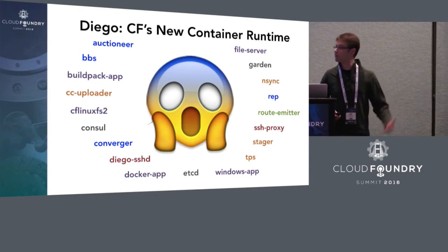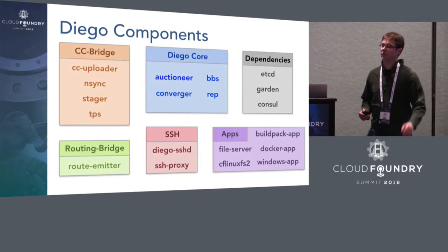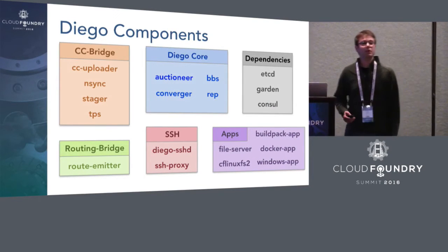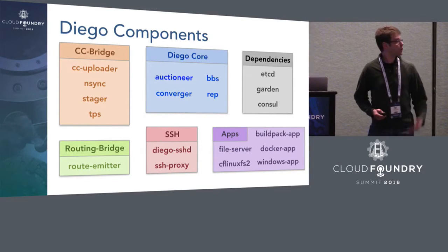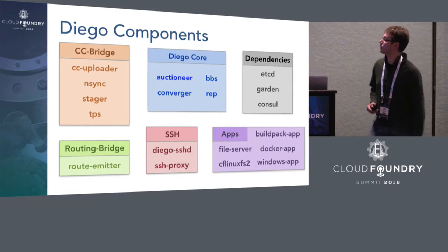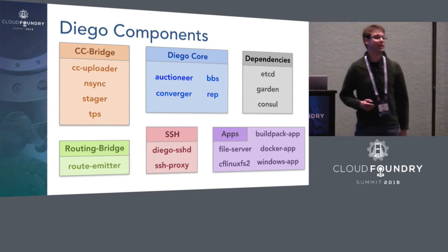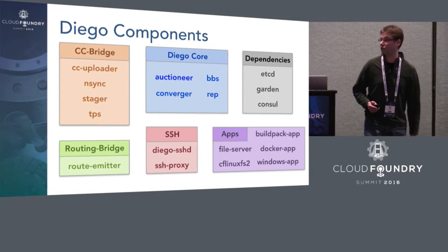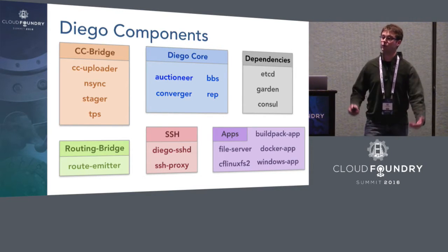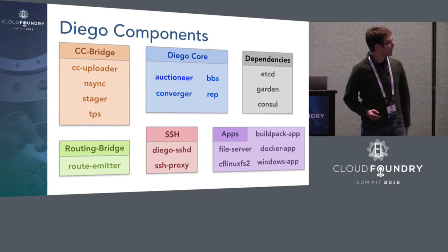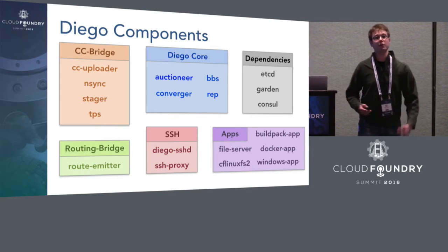Even though there are a lot more components, they each have very specific responsibilities, and we can organize them into coherent subsystems. What we think of as the core of Diego is composed of a few different components collaborating together, and they have a few dependencies. A lot of the other components we've introduced as part of Diego to integrate it into Cloud Foundry have been to translate the rest of the system to operate with this new core.